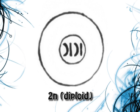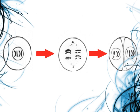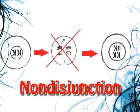Now the second example is non-disjunction. In a normal diploid cell when it's trying to replicate, it would duplicate its chromosomes and then separate them. However, an error occurs in meiosis — which can be due to a variety of factors — and this is called non-disjunction, where it fails to separate the duplicated chromosomes and creates one cell with double the number of chromosomes.